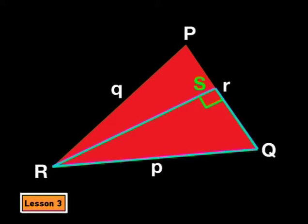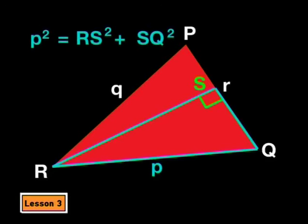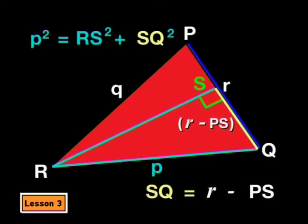The right angle triangles allow us to use Pythagoras. In triangle RQS, P is the hypotenuse. So, P squared equals RS squared plus SQ squared. Now, have a look at SQ. Do you see that it is part of line R? We can say that SQ is R minus PS. Now, we can substitute R minus PS into our equation.